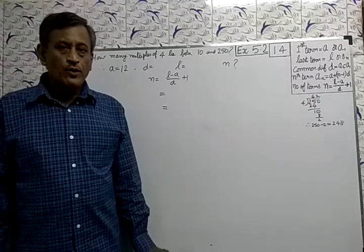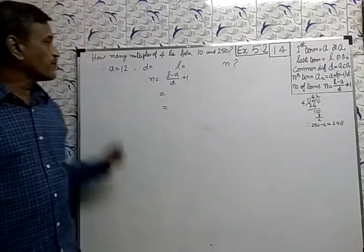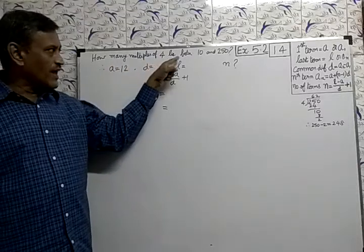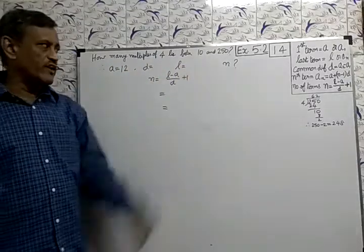Exercise 5.2, Question number 14: How many multiples of 4 lie between 10 and 250?